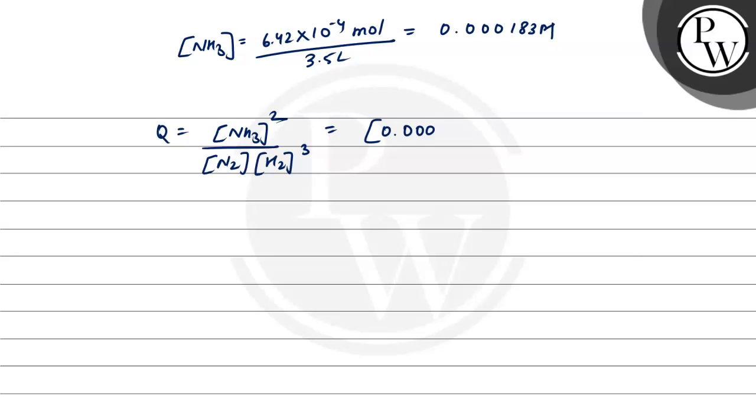So putting the values, we get 0.000183 squared divided by 0.0711 times 0.00917 to the power 3. On solving this, we get 0.61.